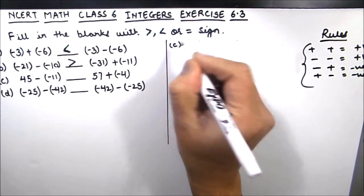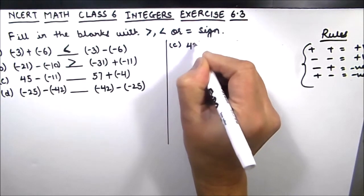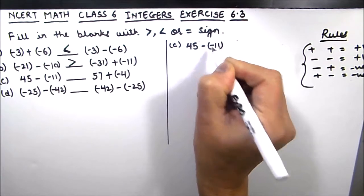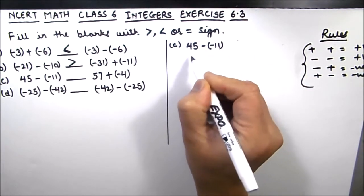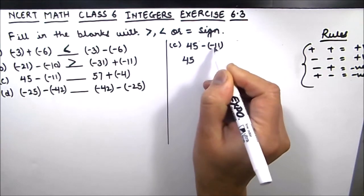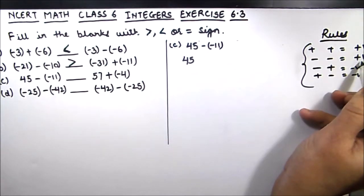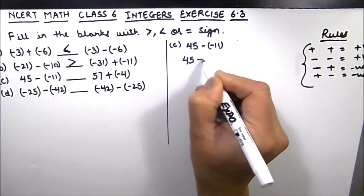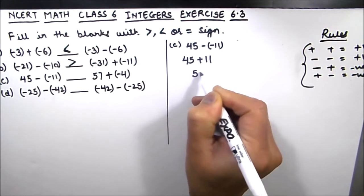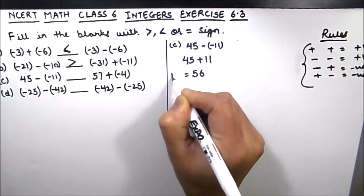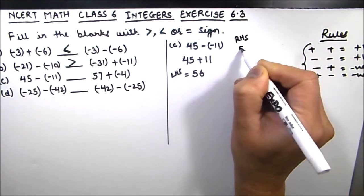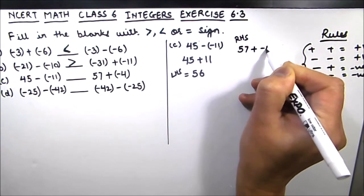Now part C. The left hand side is 45 - (-11). We write 45 as is, and minus and minus gives us plus 11, so 45 + 11 = 56. This is the left hand side. The right hand side is 57 + (-4).